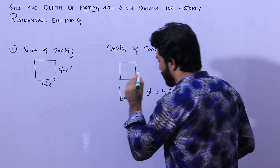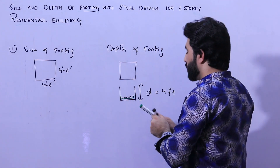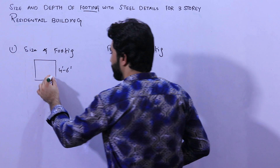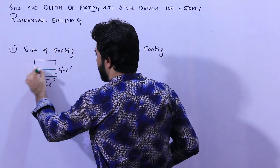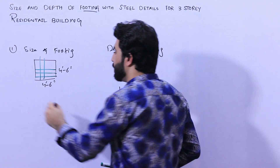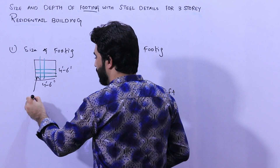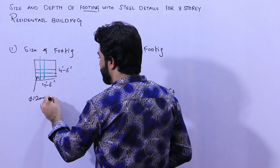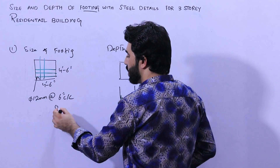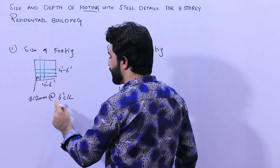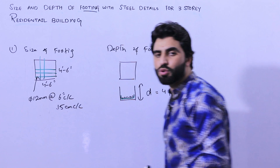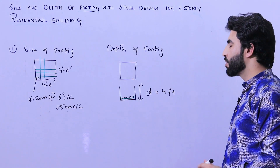Here you can see — don't use less than 12 millimeter diameter steel rod. The minimum is 12 millimeter diameter steel rod with a spacing of six inches center to center, or 15 centimeters center to center. The diameter should not be less than 12 millimeters.